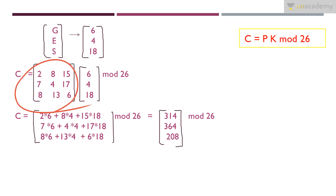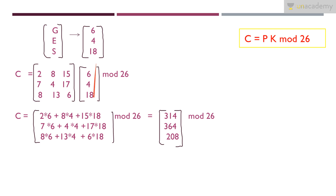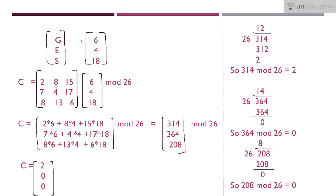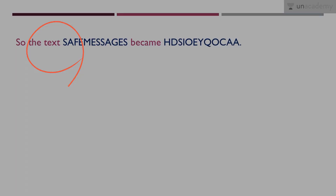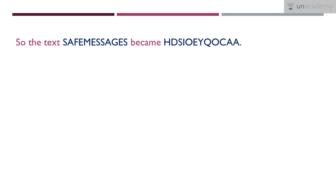Performing the matrix multiplication of K × [6, 4, 18] and applying mod 26: 314 mod 26 = 2, 364 mod 26 = 0, 208 mod 26 = 0. Converting to alphabet: 2=C, 0=A, 0=A. So GES is encrypted to CAA. The full plain text 'safe messages' is encrypted to HDSIOEIYQOCAA.